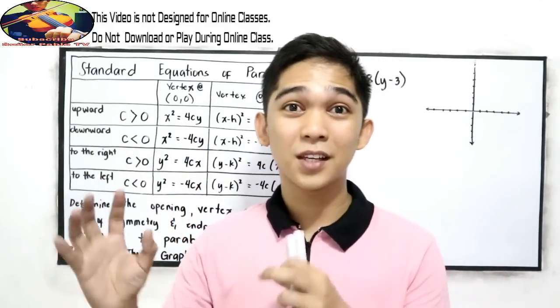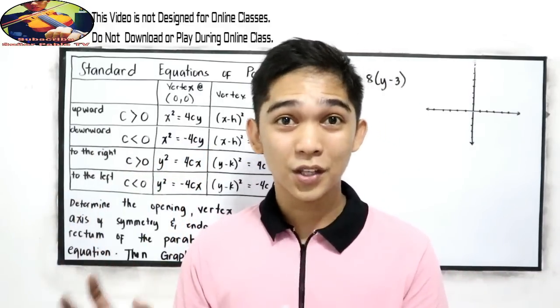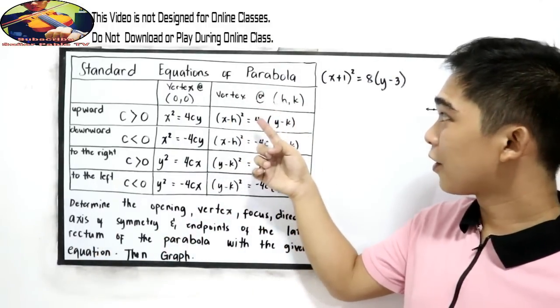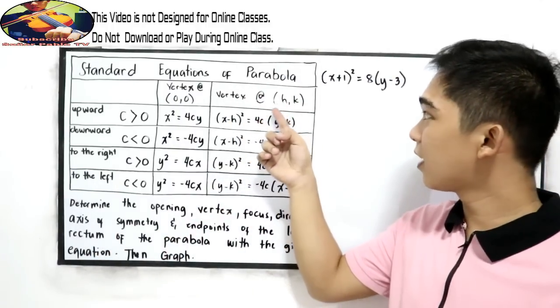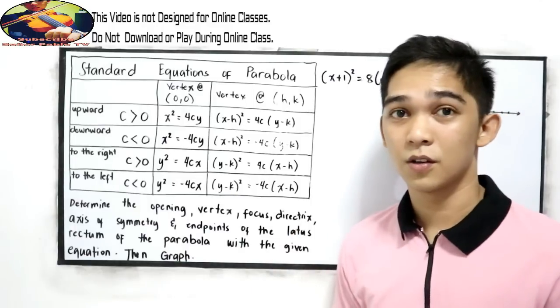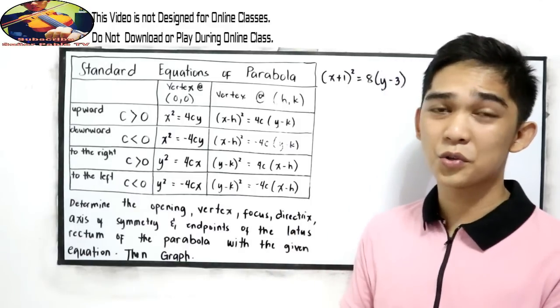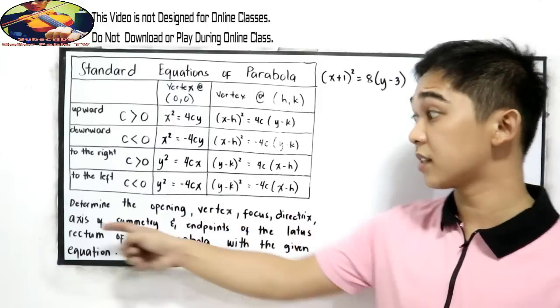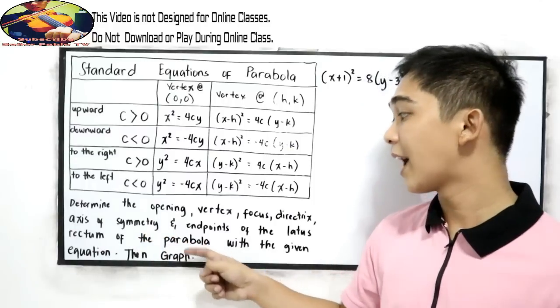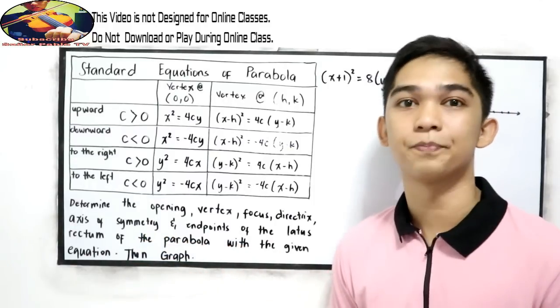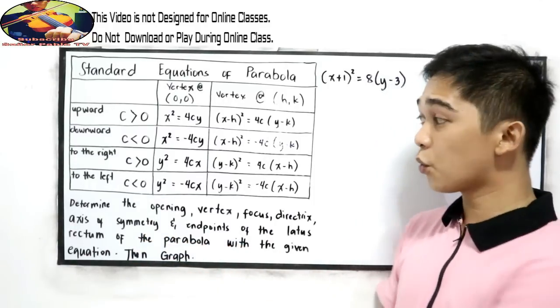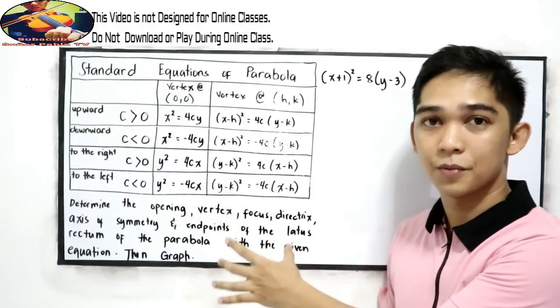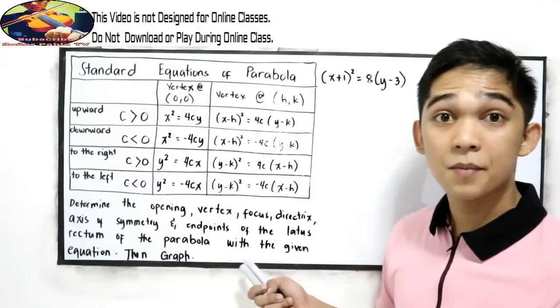So what if the given equation is in vertex form, or our vertex is at (h,k). How are we going to find the opening, vertex, focus, directrix, axis of symmetry, and endpoints of the latus rectum? So again, we're going to use this table to easily solve the equation.